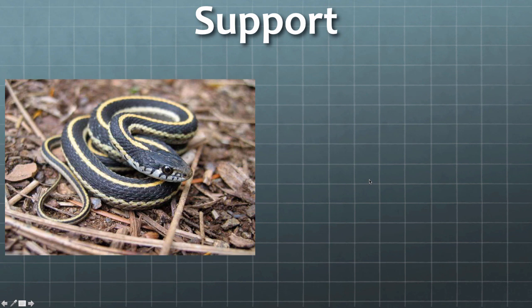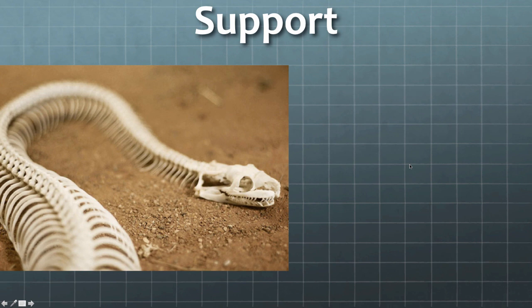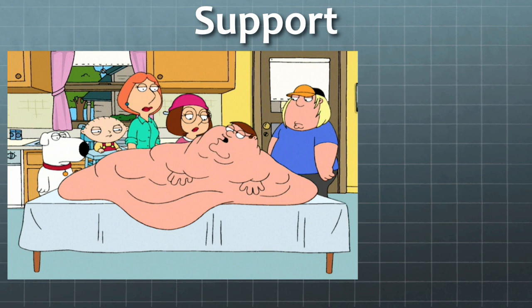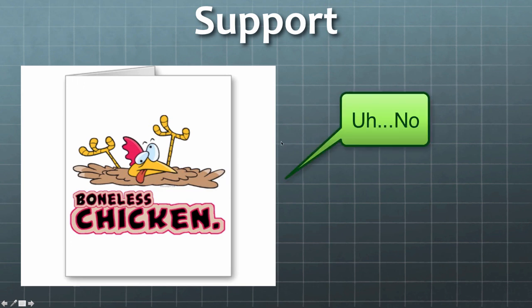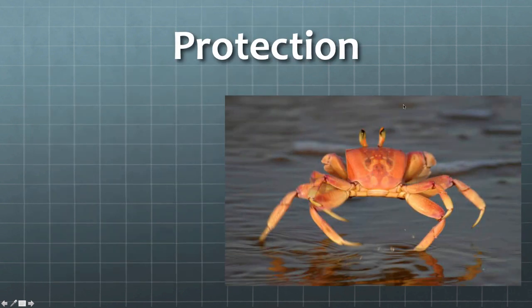How about this animal — does it have a skeleton? Yes, there is a skeleton there. A snake skeleton looks like this. We also have boneless chickens — when you go to McDonald's and it says boneless chicken meat, where did that come from? It came from this animal.